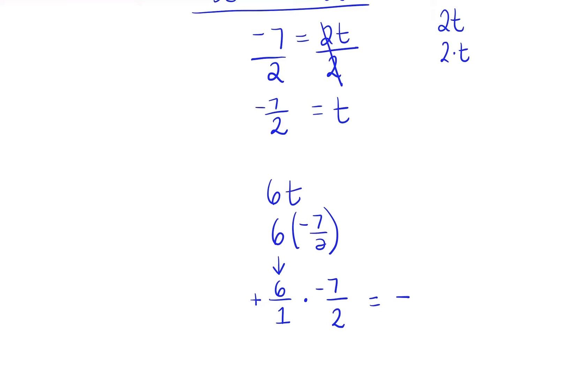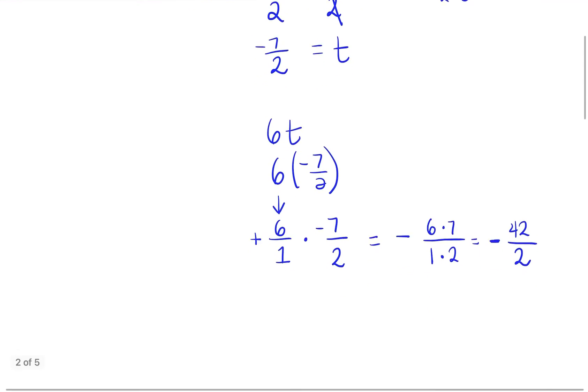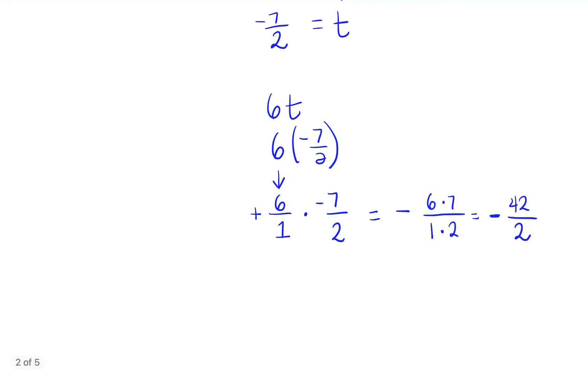So now I'm just going to multiply. So when you're multiplying fractions, you just multiply the numerators. It's 6 times 7. And then you multiply the denominators. 1 times 2. So again, I'm going to carry that negative sign. And 6 times 7 is 42. And 1 times 2 is 2. So right now I have negative 42 over 2.